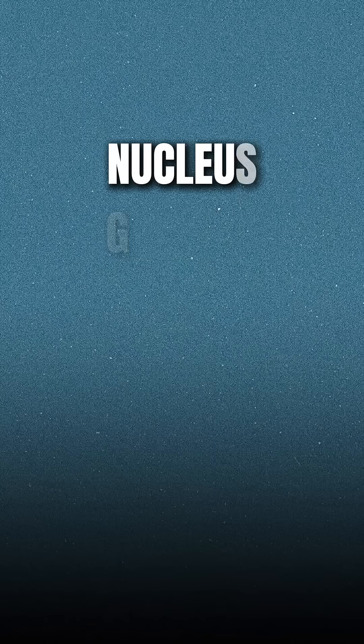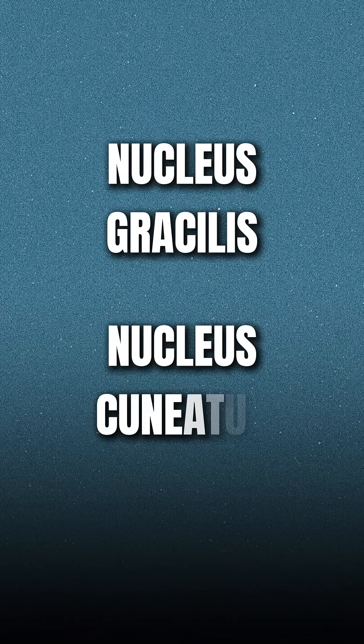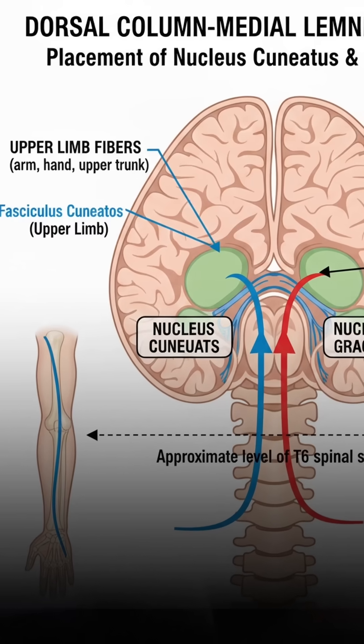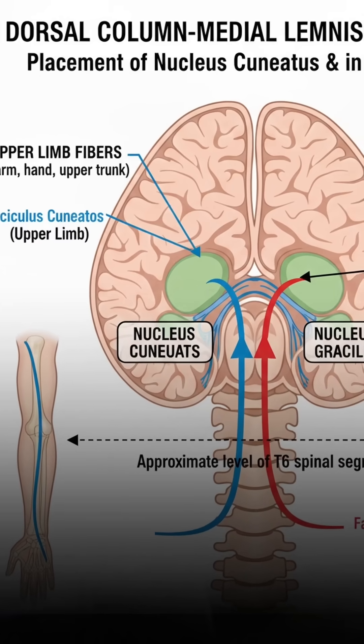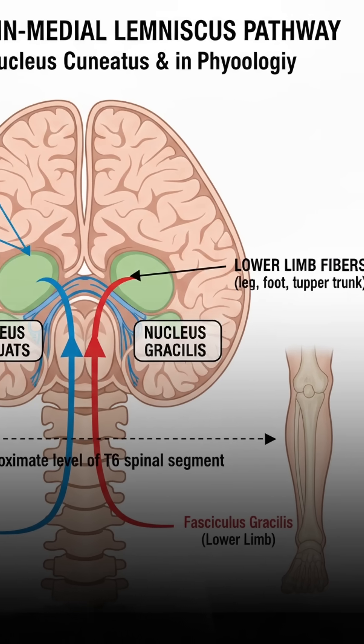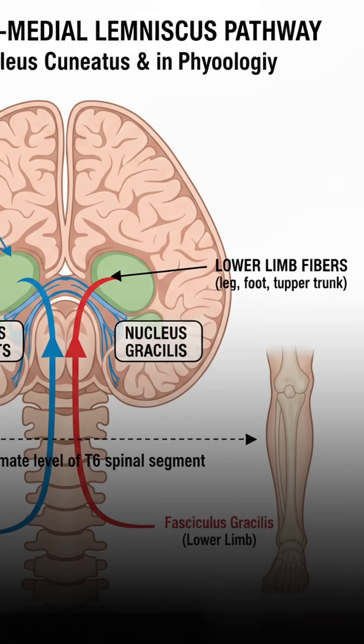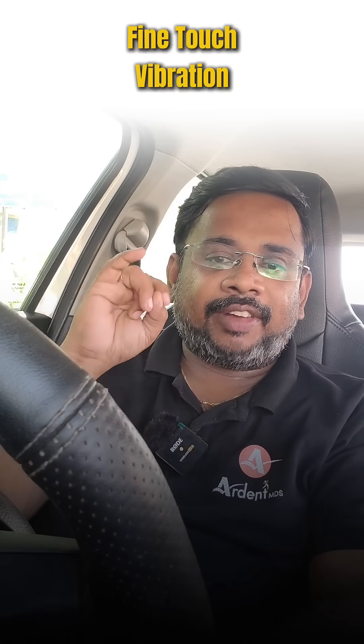Crude touch — what is it called? Dorsal Column. The Dorsal Column has two types of nerve fibers: one is called Nucleus Gracilis and the other is Nucleus Cuneatus. Nucleus Cuneatus is for the upper limb above T6, and Nucleus Gracilis is for below T6. The sensations carried are Fine Touch, Vibration, and Proprioception. This is the Dorsal Column.